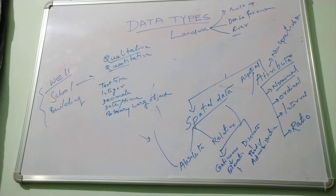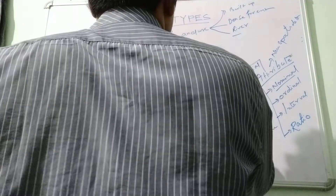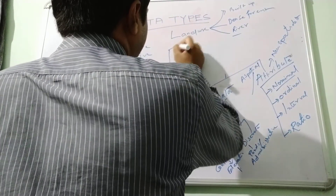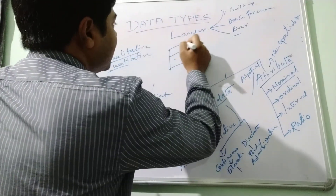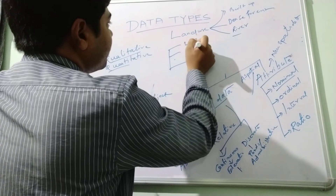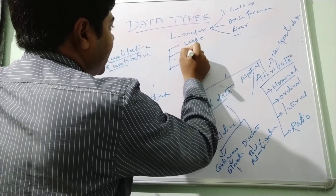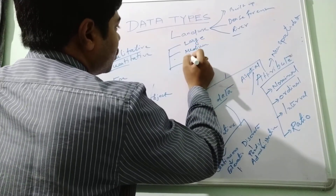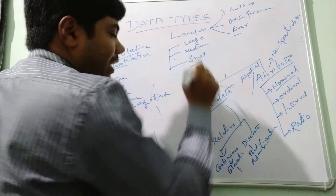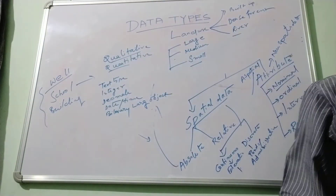Ordinal data can be discriminated by ranking. For example, in India, we classify cities as large cities, medium cities, and small cities. So there is a ranking characteristic in ordinal data.